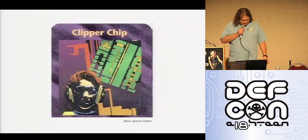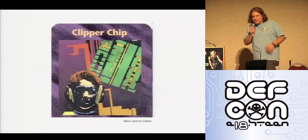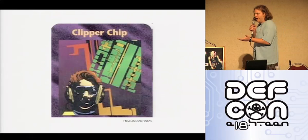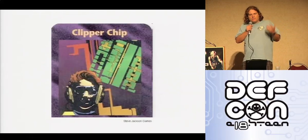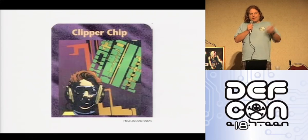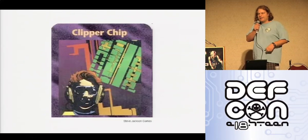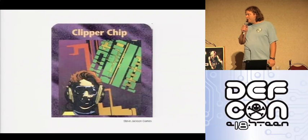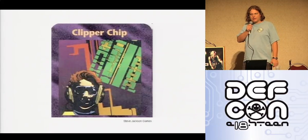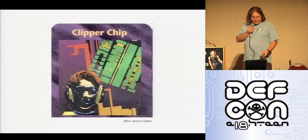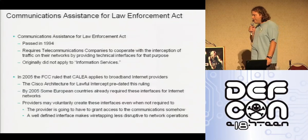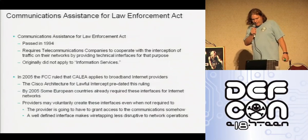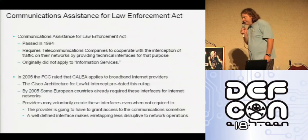One of the first salvos in this discussion was the Clipper chip. The Clipper chip was a crypto system that had a backdoor so the government could access the contents. It also had a flaw which was discovered by some cryptographers, and as a consequence it didn't become as popular as they thought it was going to. That was in the early 1990s.